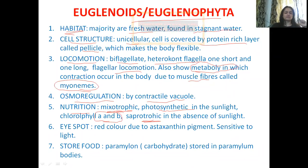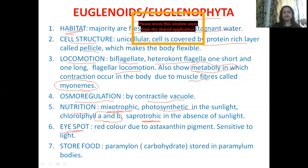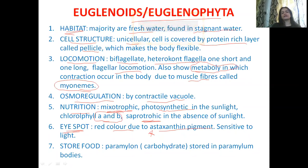The next character is the eye spot. The eye spot is sensitive to light. We have studied eye spots in Dinoflagellates and Chrysophyta as well, but Euglena's eye spot has a characteristic feature — it is red in color. This is because the eye spot contains a pigment known as astaxanthin. So in Euglena's case, the eye spot is red and is sensitive to light.